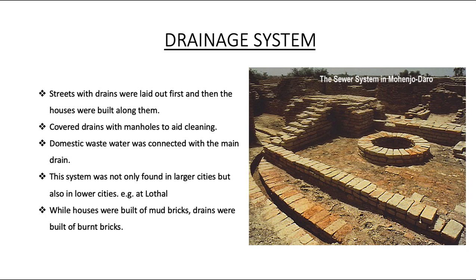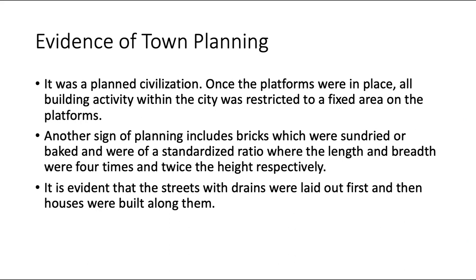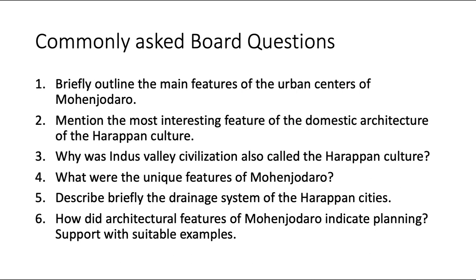For evidence of town planning — a common board exam question — you should include not only the division of towns and the drainage system, but also these three points: first, it was a planned civilization where all building activity was restricted to fixed areas on platforms; second, bricks were sun-dried or baked and of standardized ratio where length and breadth were four times and twice the height respectively; and third, streets with drains were laid out first and houses were built along them.